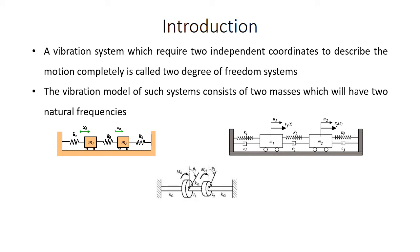These are examples for a 2 degrees of freedom system, of which the first one actually represents an undamped free vibration system. There is no external force acting on the system. We are initially giving a displacement X1 on mass M1 and a displacement X2 on mass M2, and the system starts vibrating.